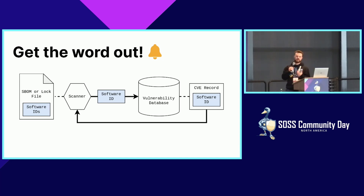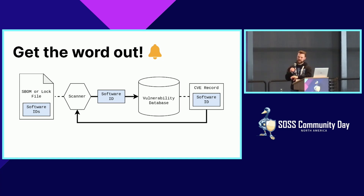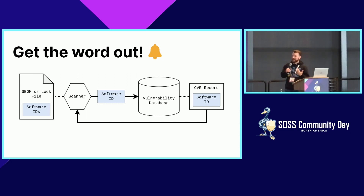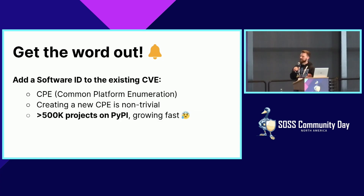A lot of people already know what happens now: we try to get users to know they need to take action. This is the typical flow for how a vulnerability scanner will take a lock file or an SBOM — a list of software IDs with names and versions — and turn that into alerts, using a vulnerability database with records. It'll try to match software IDs onto something in the record. To do that, whatever is in the lock files or SBOMs actually needs to be in the records themselves. Otherwise no match can occur, you don't get an alert, and users act as if there's nothing for them to do.